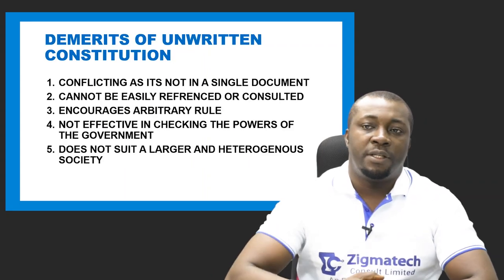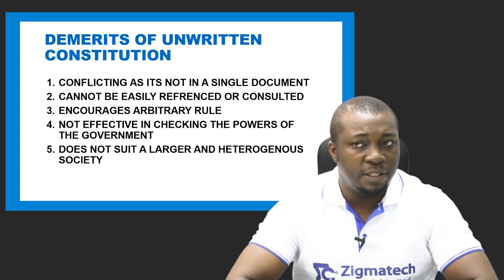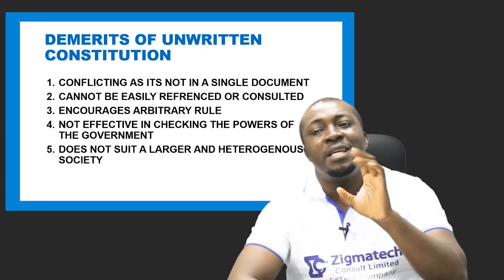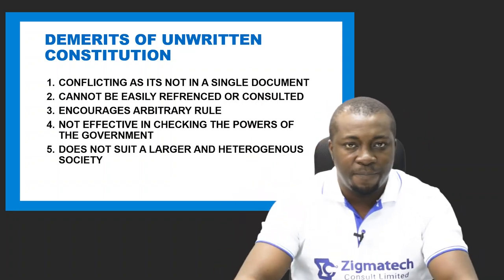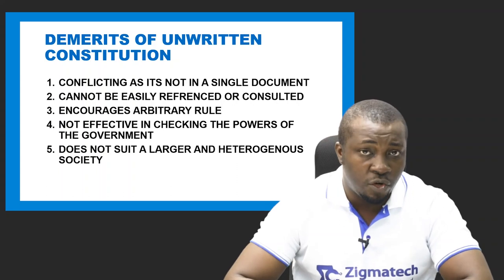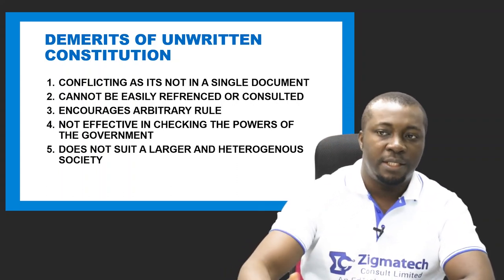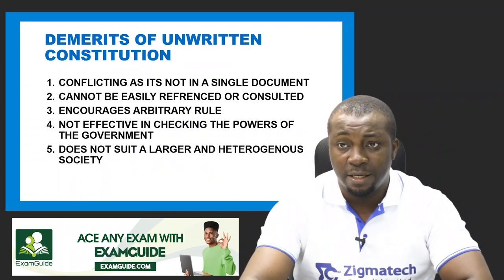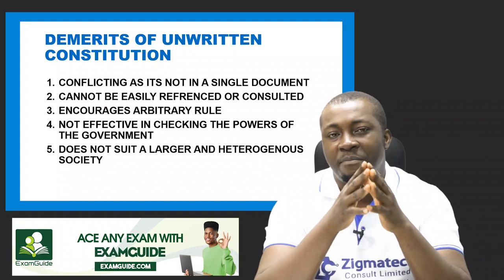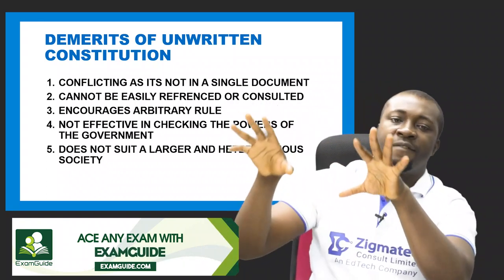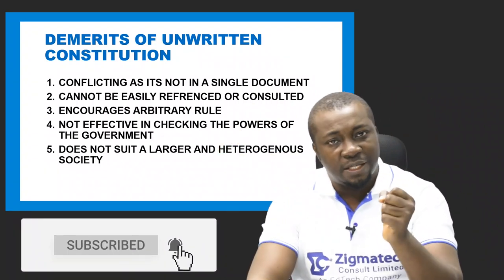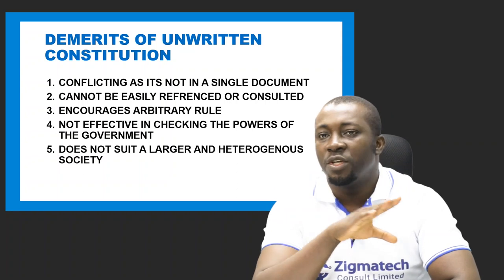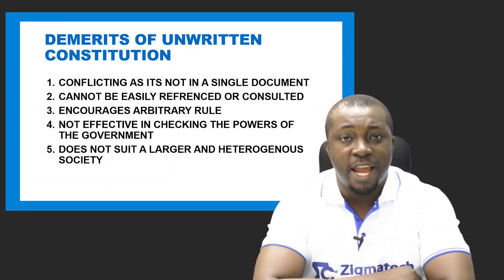Demerits of an unwritten constitution: it could be conflicting, since different documents may say different things. It cannot be easily referenced or cited because it is not clearly arranged in one document. It encourages arbitrary rule because it can be easily amended and therefore manipulated in the interest of the ruling class. It is not effective in checking the powers of government because citizens cannot easily reference where those powers are stipulated. It does not suit a large, heterogeneous society, which actually needs a federal constitution.